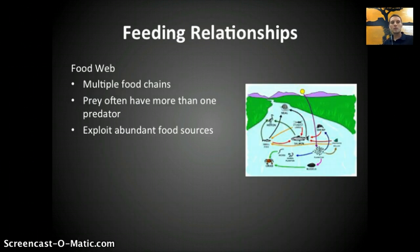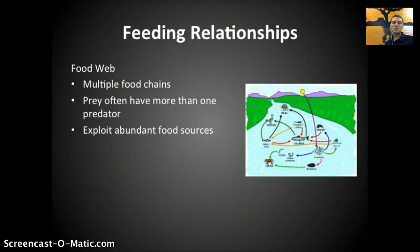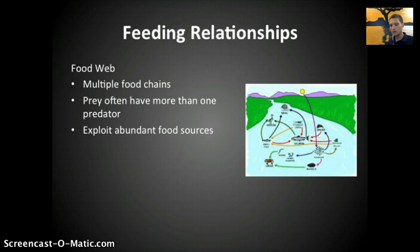Chemical energy can move through ecosystems via feeding relationships, and a better way to represent this is through a food web. A food web is essentially multiple food chains put together that show all of the feeding relationship interactions between different organisms within an ecosystem. Prey often have more than one predator, so it's not just a linear transfer of energy — there are many different interactions. Predators take advantage of the easiest and most abundant prey available, and a food web helps show how chemical energy is transferred through different parts of the ecosystem.